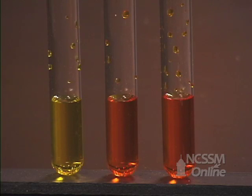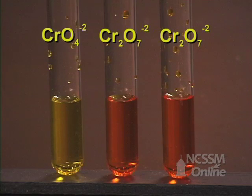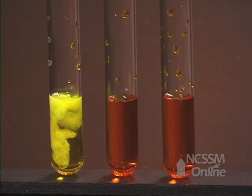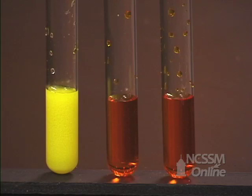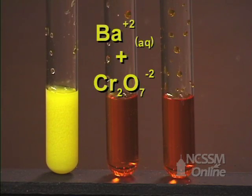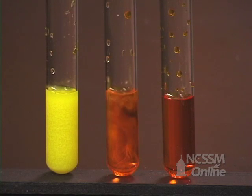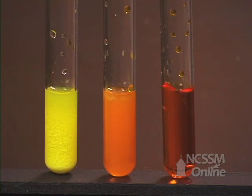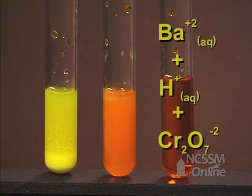We have three test tubes: one containing a solution of potassium chromate and two test tubes containing solutions of potassium dichromate. We are going to add a solution of 0.1 molar barium chloride to the first tube. We are going to add a solution of barium chloride to the second tube. To the third tube, we are going to add some nitric acid first, and then we are going to add barium chloride to the solution.